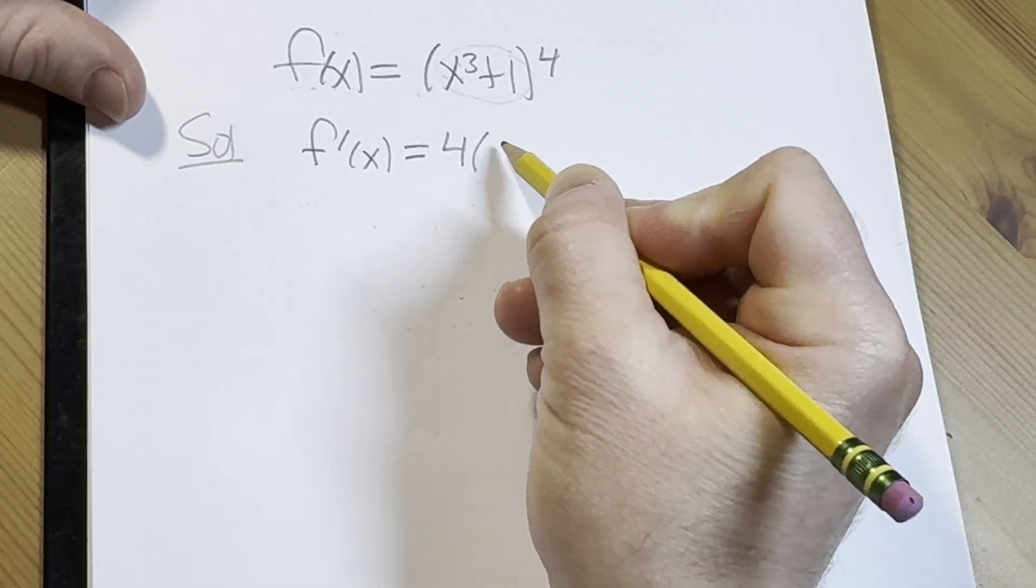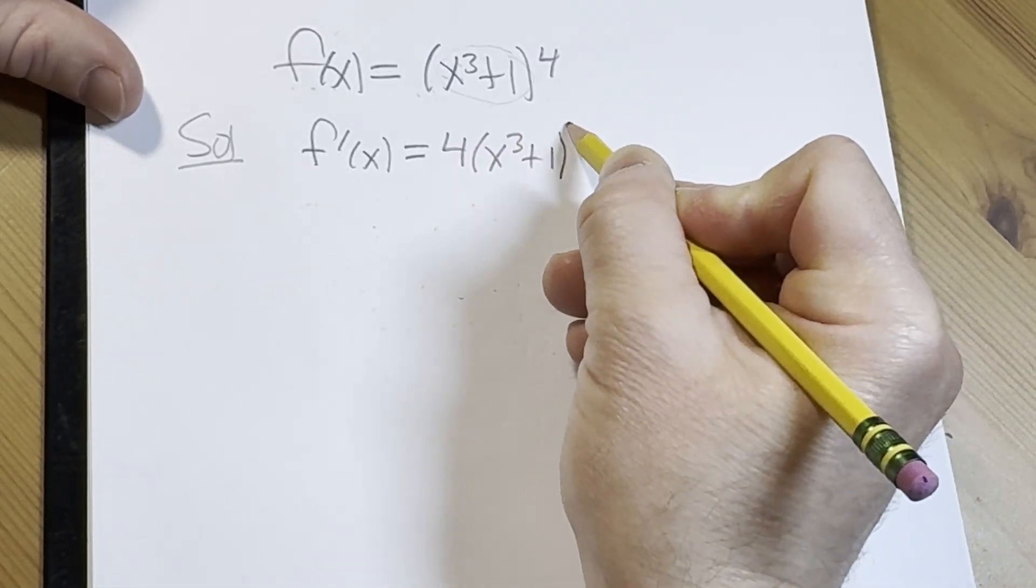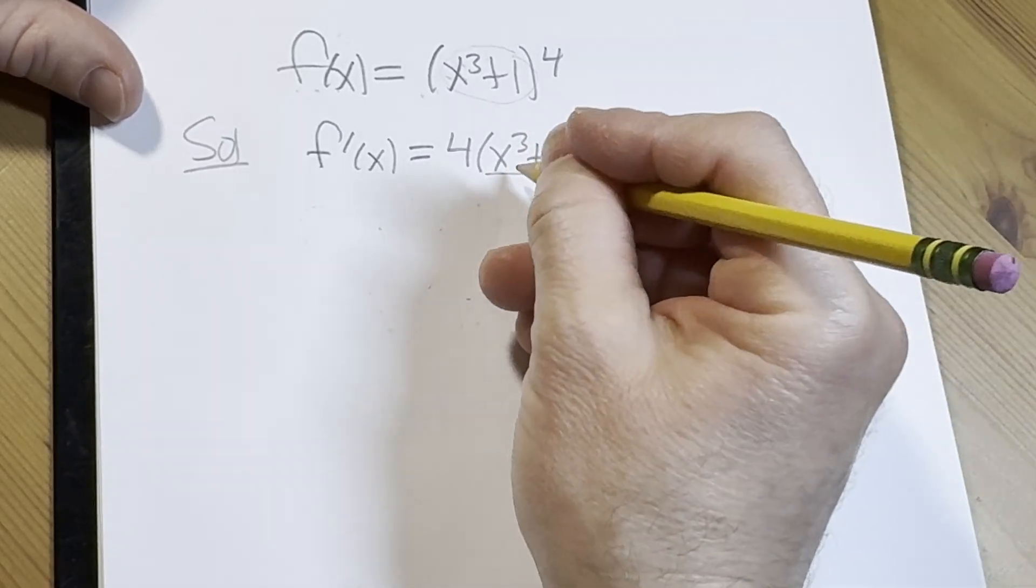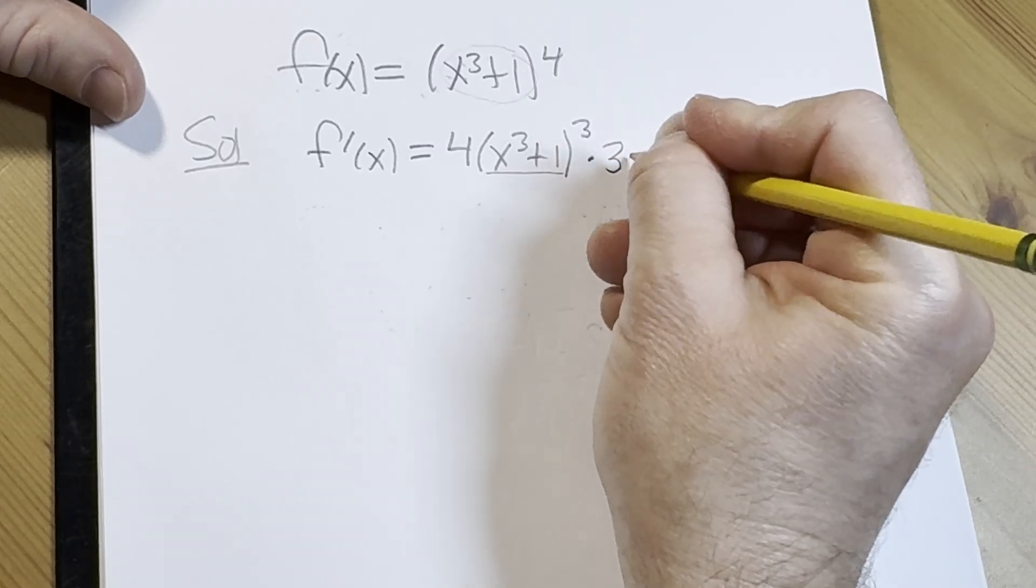So bring down that 4, leave the inside untouched, subtract 1 from the exponent, and then multiply by the derivative of the inside function. The inside function is x³+1, so its derivative is simply 3x².